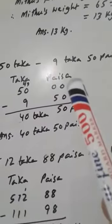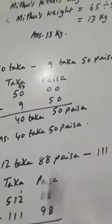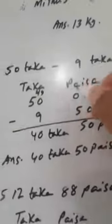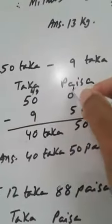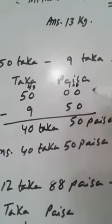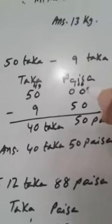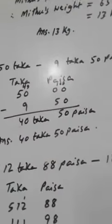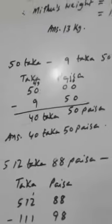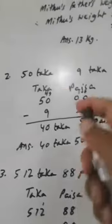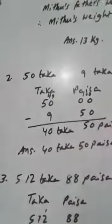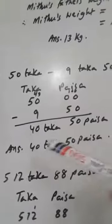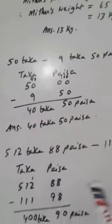From 100 paisha we can subtract 50 paisha, giving 50 paisha. Here is 49; 49 minus 9 equals 40. So the answer is 40 taka 50 paisha.